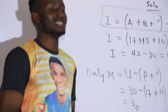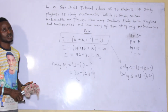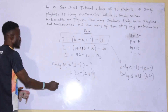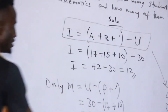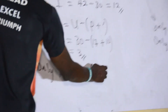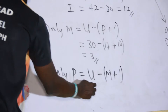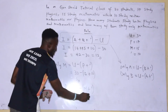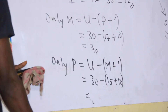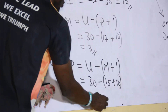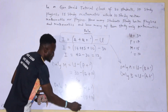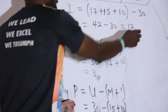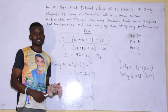If you use your Venn diagram as well, you are going to get the same answer. But we are using this shortcut because of those doing CBT exams. Now let me also solve for only physics. Only physics will now be universal set minus those that study mathematics, plus the complement. Only physics equals 30 minus 15 plus 10, which gives 30 minus 25, and that equals 5. So those that study only physics is 5, only mathematics is 3, and both subjects is 12.